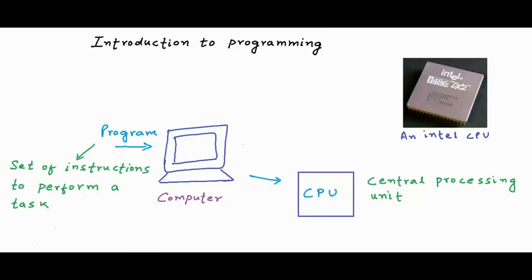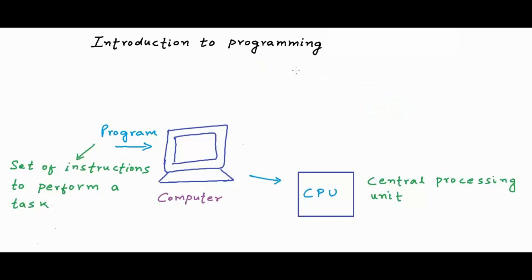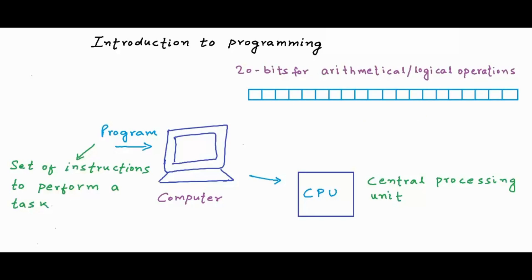Intel is one of the companies that makes CPUs. So the CPU is the one that has to execute your instructions. Each instruction to the CPU has to be a pattern of bits — a pattern of 1s and 0s. But an instruction cannot be any random pattern of bits; it has to be in a certain format so that the CPU is able to decode and execute it. A set of specifications are laid out for a CPU and your instructions must follow those specifications. For example, a specification can be that any instruction to perform an arithmetical or logical operation must be in 20 bits.